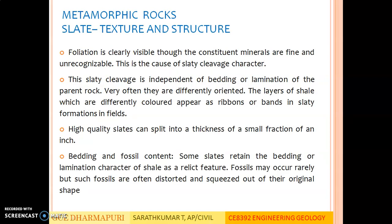Texture and structure of slate: Foliation is clearly visible though the constituent minerals are fine and unrecognizable. This is the cause of the slaty cleavage character. This slaty cleavage is independent of the bedding or lamination of the parent rock; very often they are differently oriented. The layers which are differently colored appear as ribbons or bands in slaty formations in the field. High quality slates can split into a thickness of a small fraction of an inch. Bedding and fossil content: Some slates retain the bedding or lamination character of shale as a relict feature. Fossils may occur rarely, but such fossils are often distorted and skewed out of their original shape.